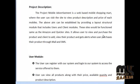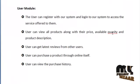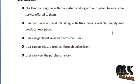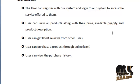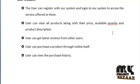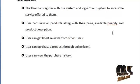This starts from the user model. The user can register and login to our system to access the services offered to them. The user can view all products along with the price, available quantity, and product description. Users can get the latest reviews from other users, purchase a product online, and view the purchase history of their transaction details. The data flow diagram for the user model is shown below.